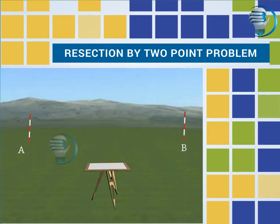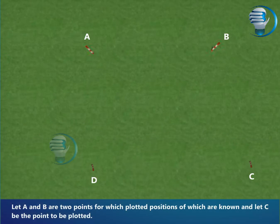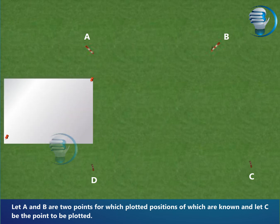Let us see the method of resection by 2-point problem. Let A and B are two points for which plotted positions are known, and let C be the point to be plotted.